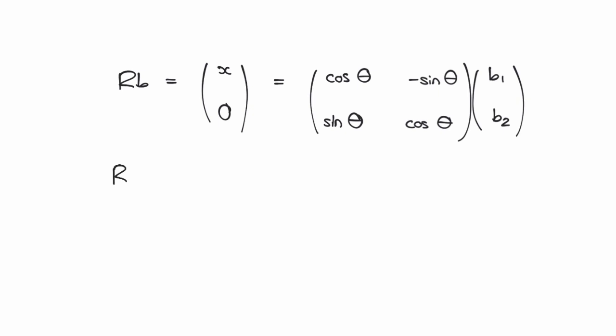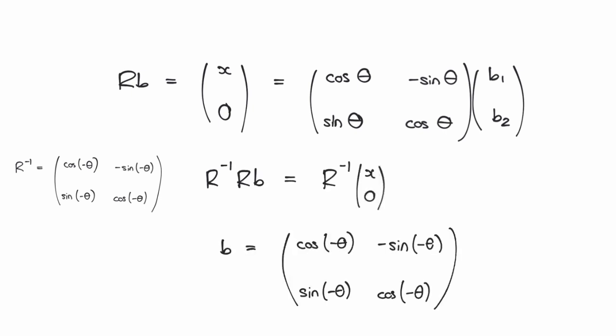So the inverse of a rotation by angle theta is also a rotation but of angle minus theta. So if R was rotating clockwise, the inverse of R would be rotating anticlockwise. So let's pre-multiply both sides of the equation by R inverse. R and R inverse cancel out, so this is our new equation.